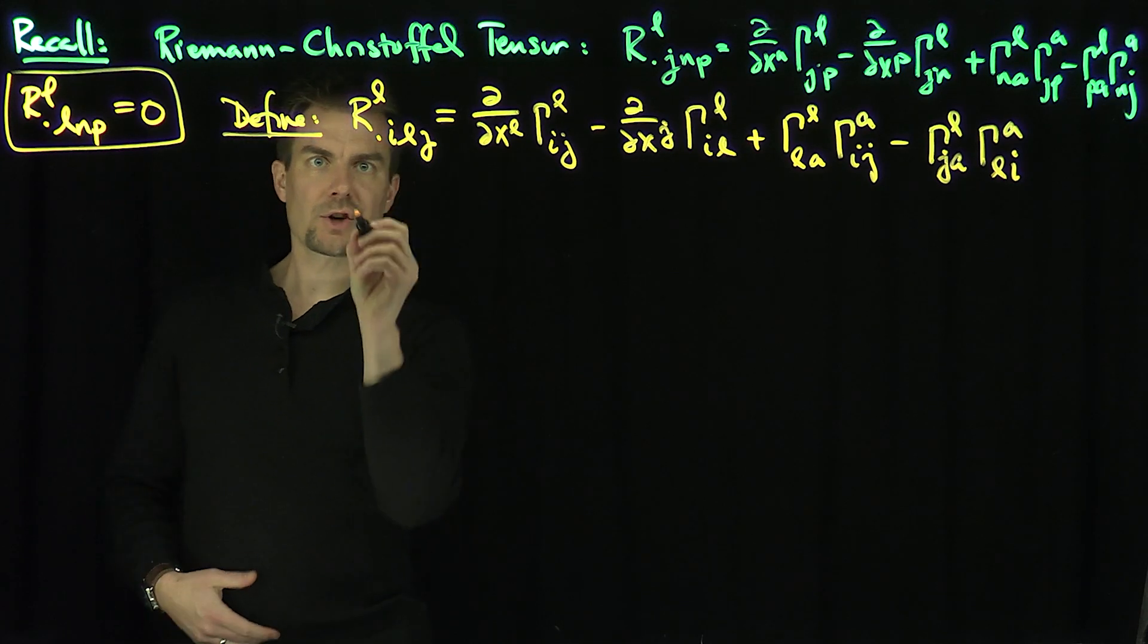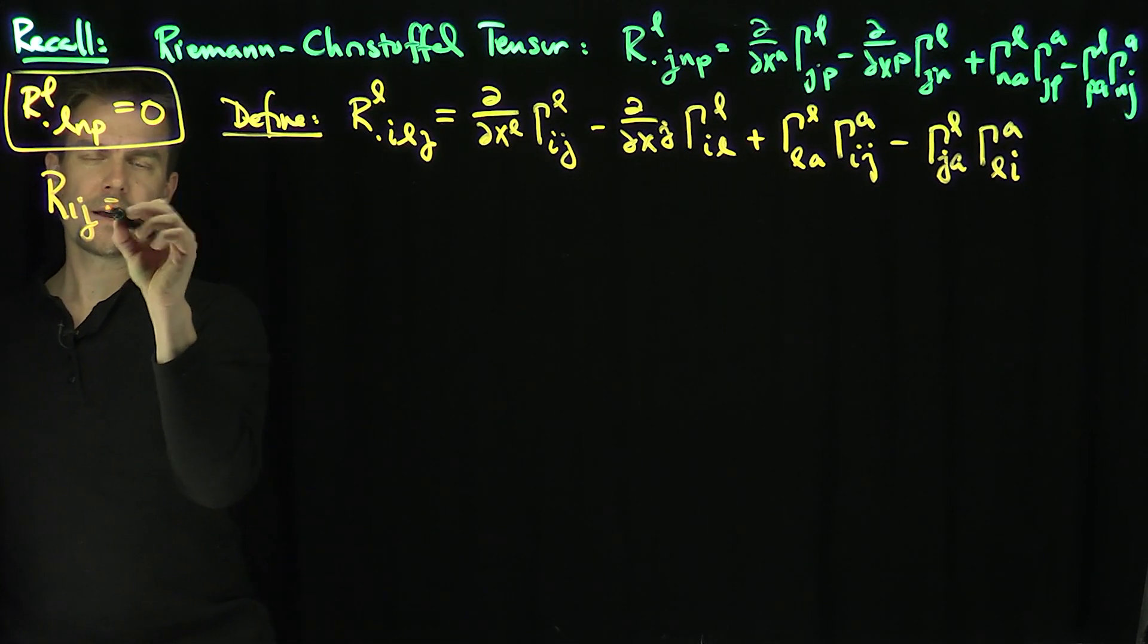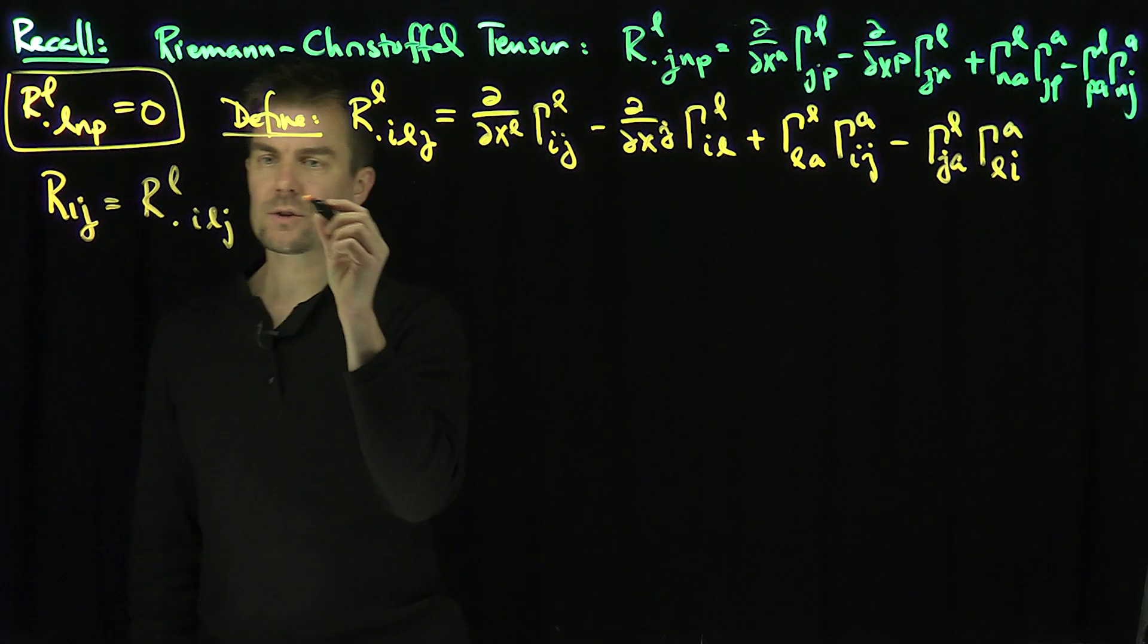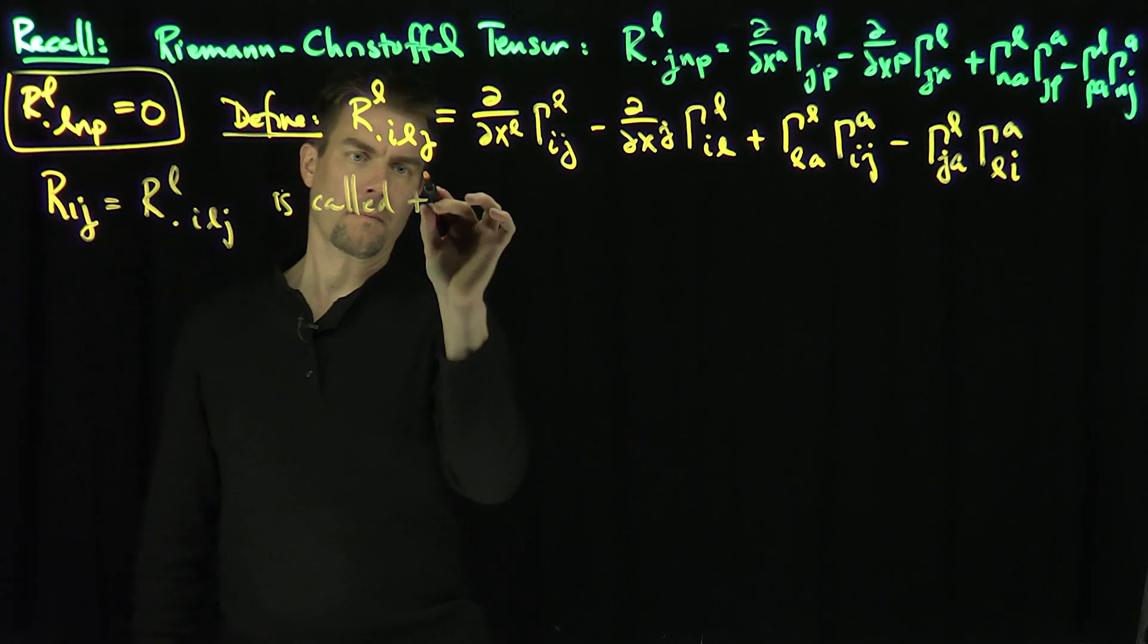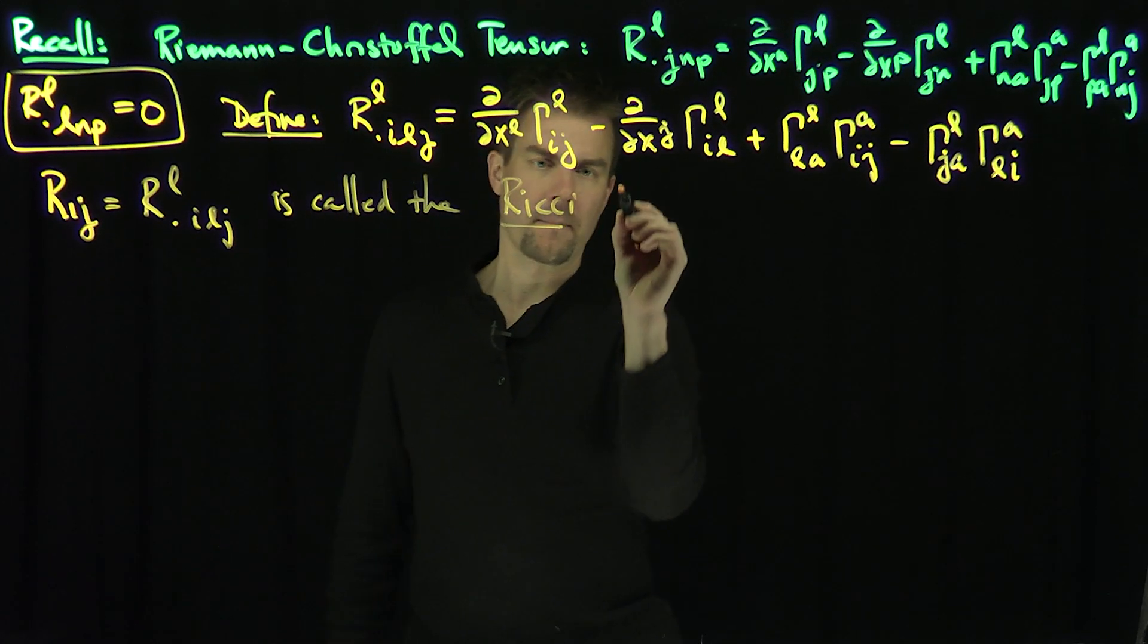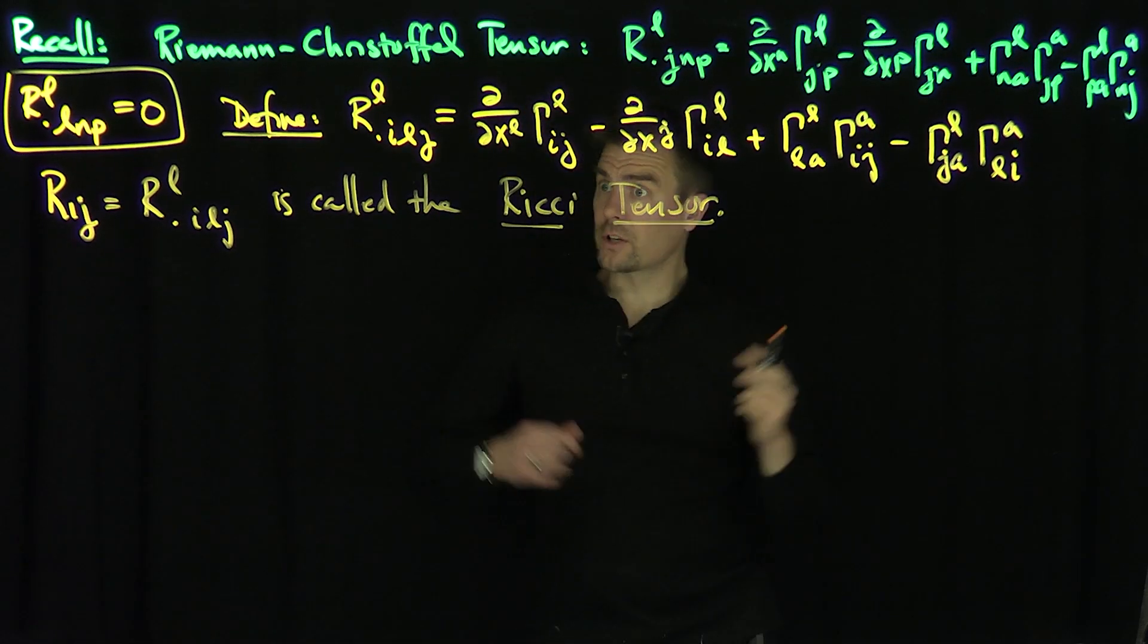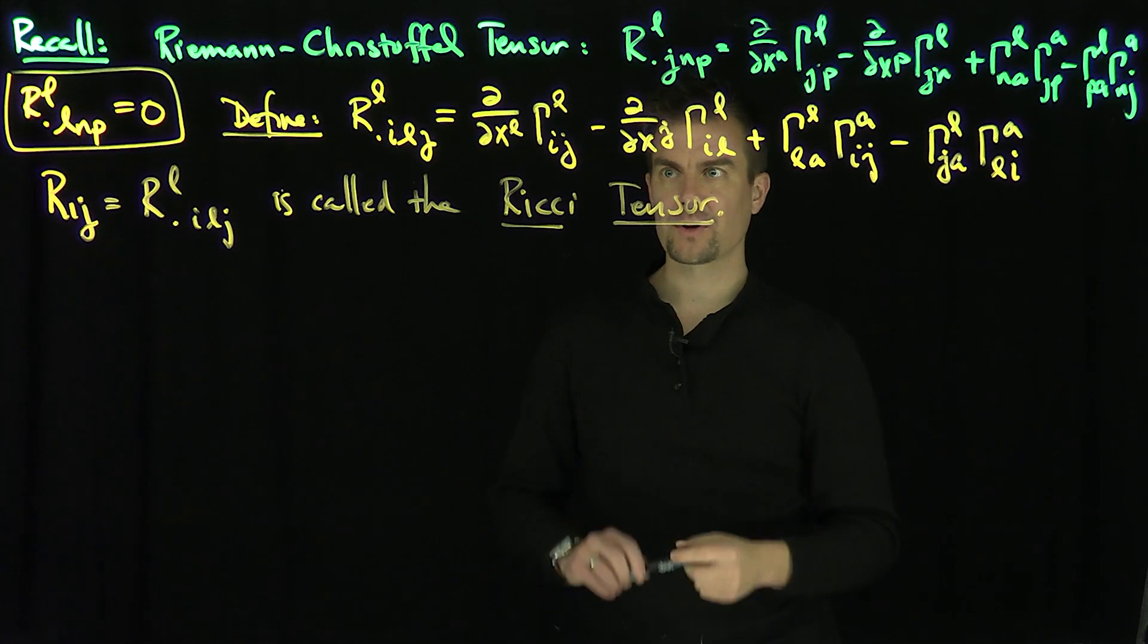So this expression is called the Ricci tensor. R_IJ, which is R^L_ILJ, is called the Ricci tensor. The Ricci tensor occurs all over the place in mathematics. So let's figure out some properties of this Ricci tensor. Let's simplify this. What's one immediate consequence of this formalism?